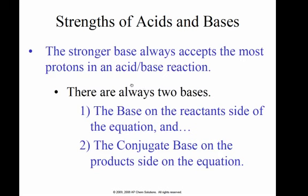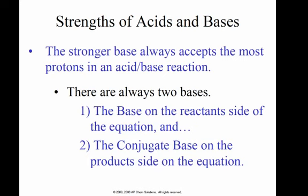The stronger base always accepts the most protons in an acid-base reaction. There are always two bases: the base on the reactant side and the conjugate base on the product side. In this particular situation, I've got HBr, which is an acid, and water. I'm going to produce hydronium and bromide. Hydronium is going to be the conjugate acid to water. Bromide is my conjugate base to HBr. So water and bromide are both competing for protons. They're both bases. They want to accept a proton. Water is the stronger of the two, so it wins most of the time, and the reaction will go to completion.